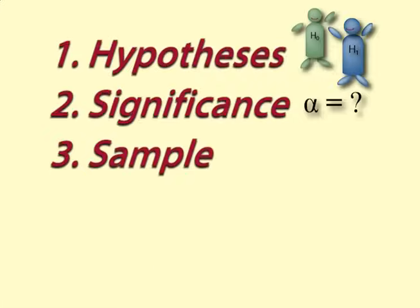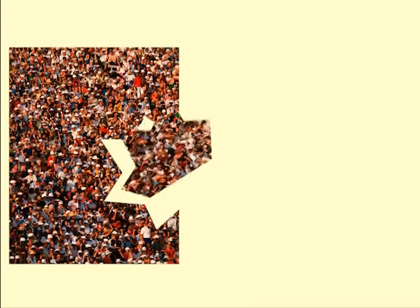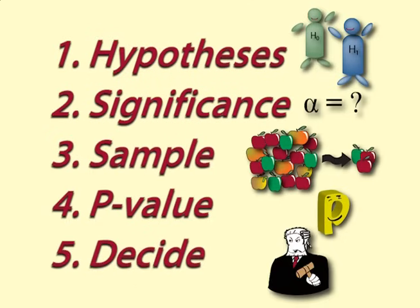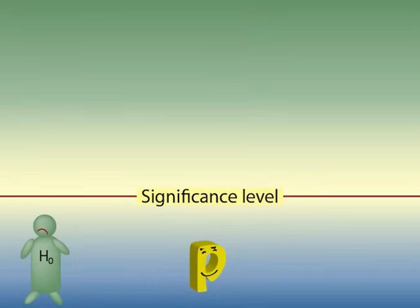Step 3: Take a sample from the population to provide the statistics you need. Step 4: Calculate the p-value. This is almost always done by a computer package. Step 5: Use the p-value to decide whether to reject the null hypothesis. If the p-value is less than the significance level you chose earlier, you will reject the null hypothesis — the sample has given you evidence that the null hypothesis is wrong.